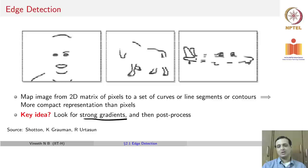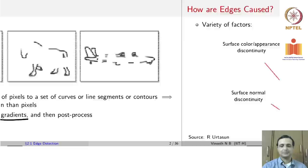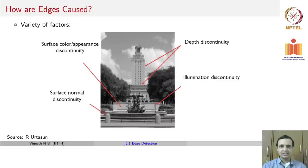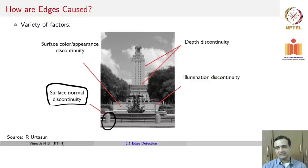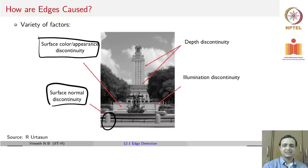Why do we say gradients? Before we mathematically understand how to detect edges, let us understand how edges are formed in the first place. Given an image, edges are fundamentally some form of discontinuity in the image. The discontinuity could be because of surface normals — for example, on a cylindrical pole the surface normal direction changes and beyond a point there is a discontinuity which appears as an edge. Another option is simply a color or appearance discontinuity.